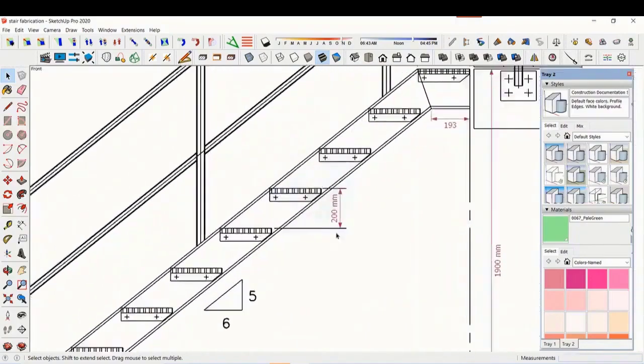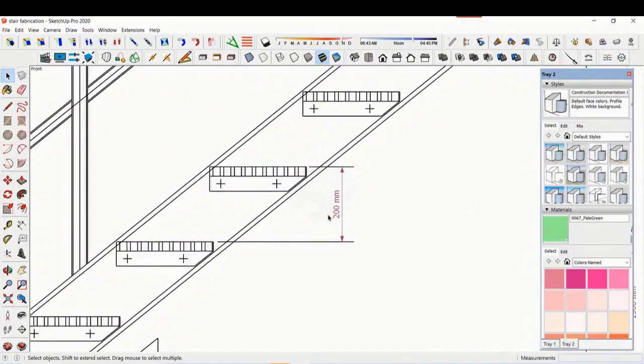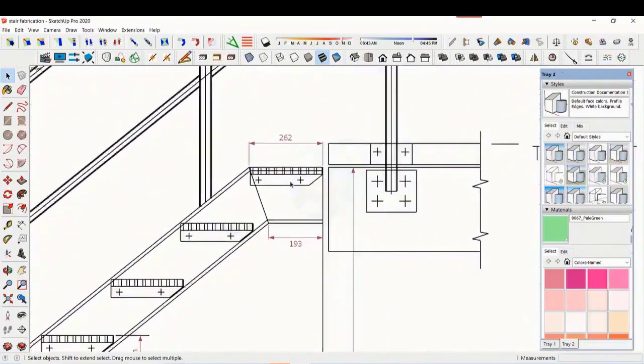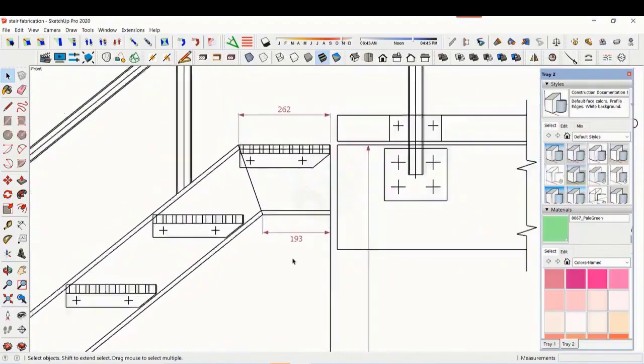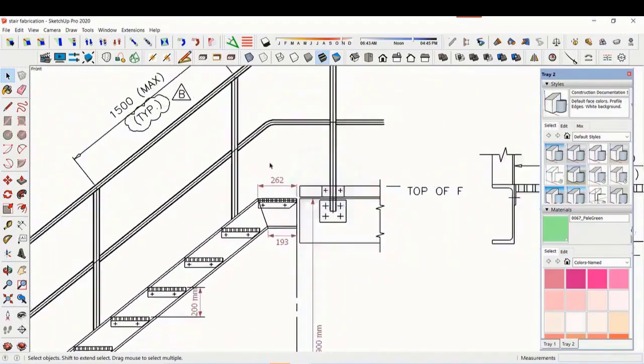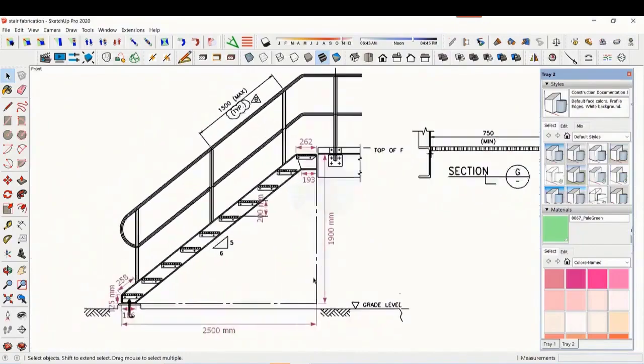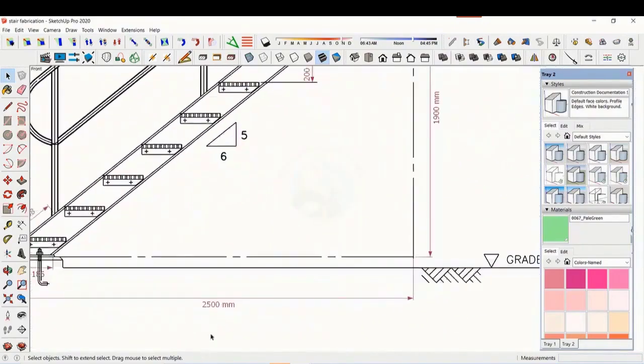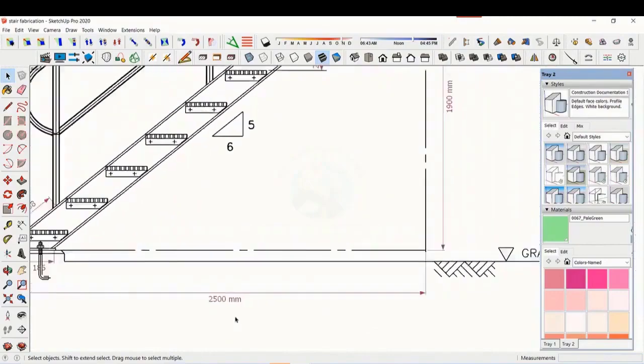The basic structure is made from ISMC 200. The height of the staircase is 1900 mm and the length is 2500 mm. The width of the staircase is 750 mm.